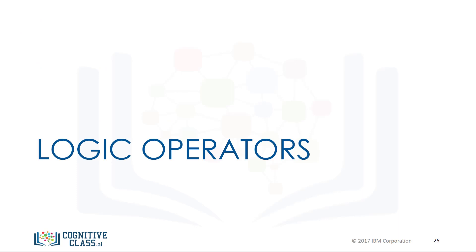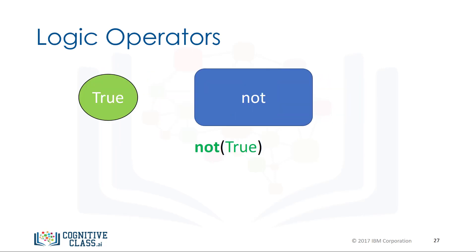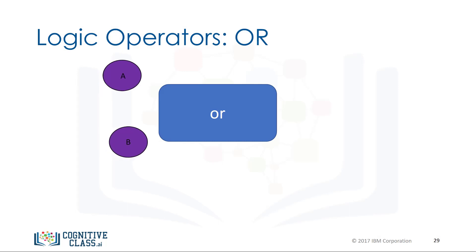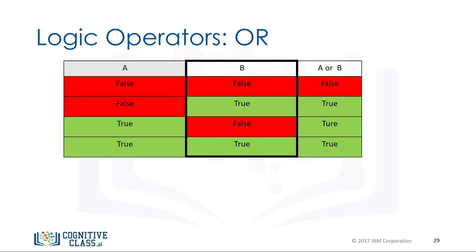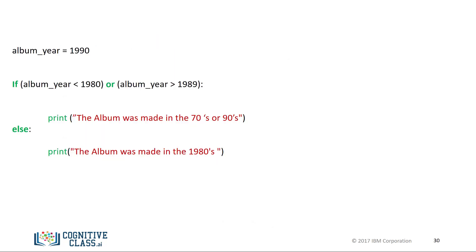Now let's take a look at logic operators. Logic operations take Boolean values and produce different Boolean values. The first operation is the not operator — if the input is true, the result is false; if the input is false, the result is true. Let A and B represent Boolean variables. The OR operator takes in the two values and produces a new Boolean value. We can use a table to represent the different values: the first column is possible values of A, the second is possible values of B, and the final column is the result of applying OR. The OR operator only produces a false if all the Boolean values are false.